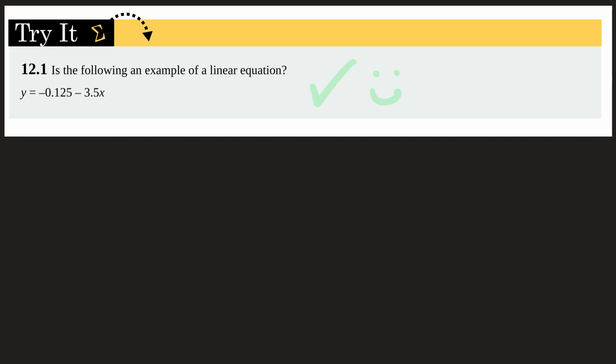So at some point in your algebra journey, you learned about something called the slope-intercept form of a line. And it is y equals mx plus b. Now, of course, in this slope-intercept form, there is a slope and an intercept. That's how it gets its name. So in this case, m is the slope and b is the y-intercept.